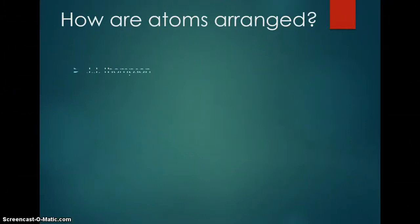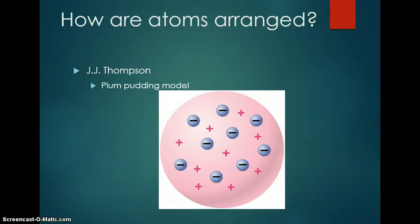How are atoms arranged? J.J. Thomson came up with his model that he called the plum pudding model. He knew that atoms were electrically neutral. So therefore, if we have negative pieces, we must have positive pieces.